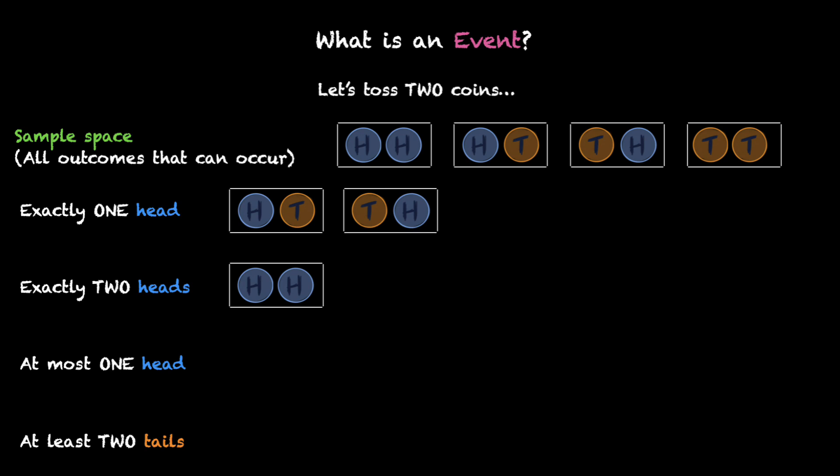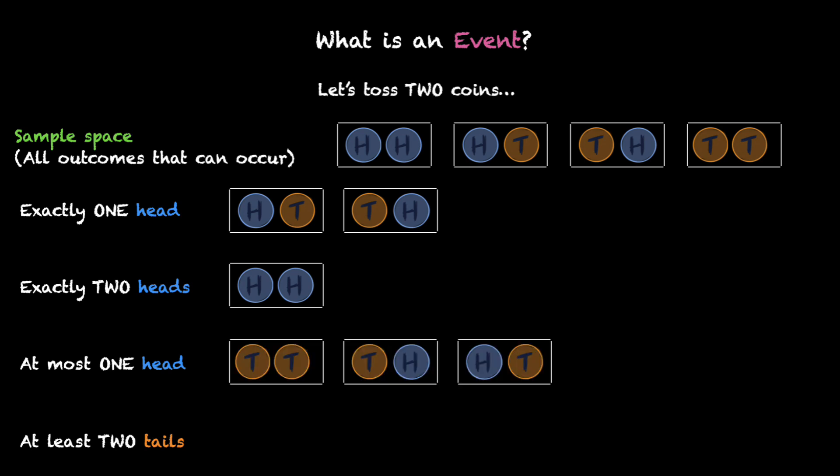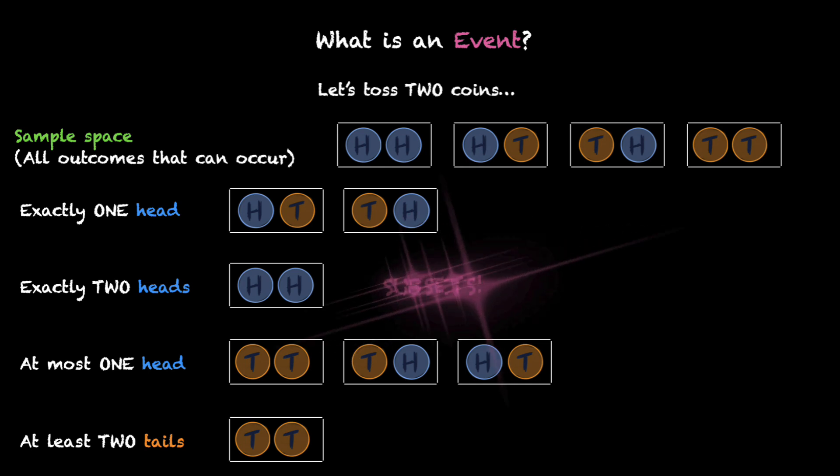And how do we get at most one head? At most one head means the maximum number of heads is one. So either we can have zero heads, which means both of them as tails, or either one of them as heads and the other one as tails. Now how do we get exactly two tails? Again, there's only one scenario — when both of them are tails. We made smaller groups of the outcomes from the sample space. In math, we call them subsets.